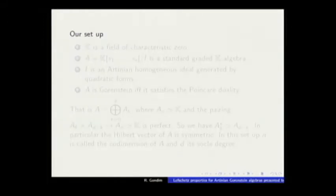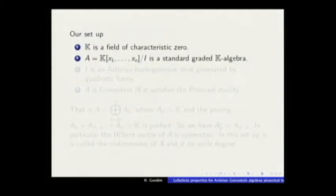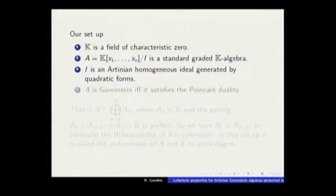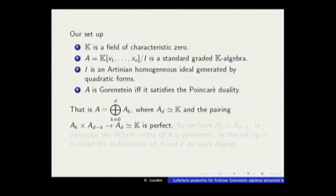The setup: K is a field of characteristic zero. Both conjectures were posed in characteristic zero. A is a standard graded K-algebra, so the variables have degree one. I is an Artinian homogeneous ideal generated by quadratic forms. In this case, the Gorenstein condition is equivalent to Poincare duality, so it's very close to the original problem, the real Lefschetz theorem.